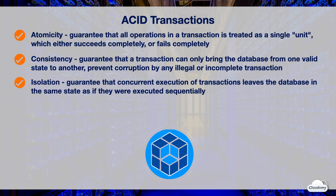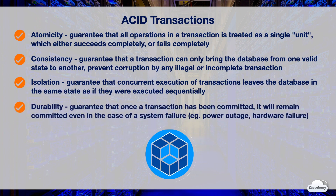Isolation guarantees that concurrent execution of transactions leaves the database in the same state as if they were executed sequentially. Durability guarantees that once a transaction has been committed, it remains committed even in the event of an outage such as a power outage or system failure.